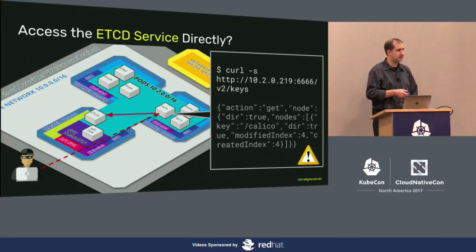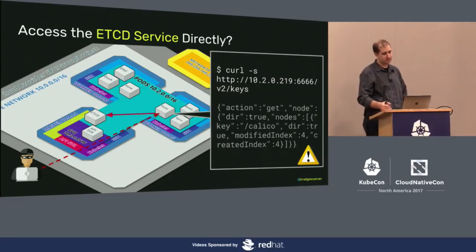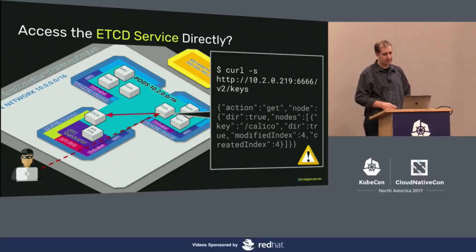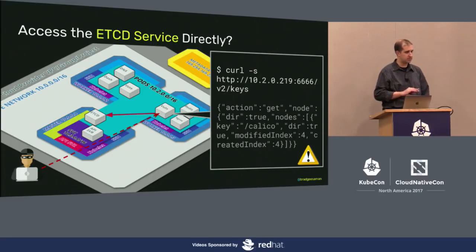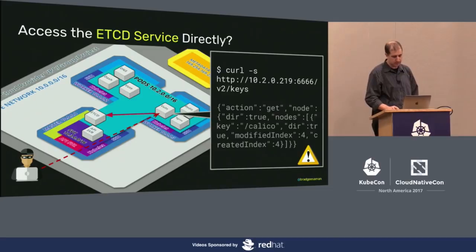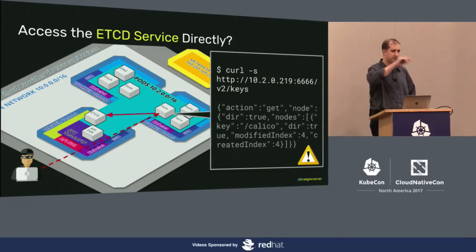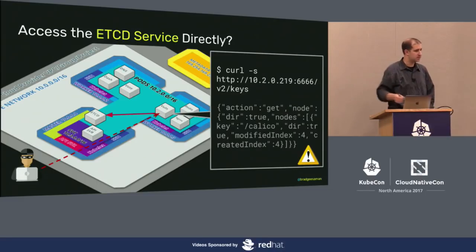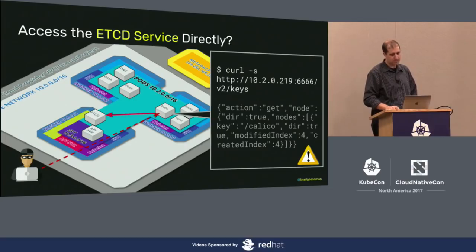Accessing etcd directly: most clusters don't expose etcd to workers, but some install a separate etcd instance to support Calico or network policy back-ending. In some cases that's also exposed with no TLS, authentication, or authorization. You may be able to defeat the system storing your network policies — you can go in and tell Calico to forget all its network policies, and Calico will happily remove all network policies from your cluster. This is pretty rare, but it does happen.